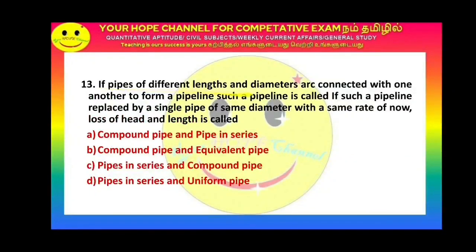Next question: If pipes of different lengths and diameters are connected with one another to form a pipeline, such a pipeline is called a compound pipeline. When a compound pipeline is replaced by a single pipe of the same diameter with the same rate of flow and head loss, it is called an equivalent pipe.